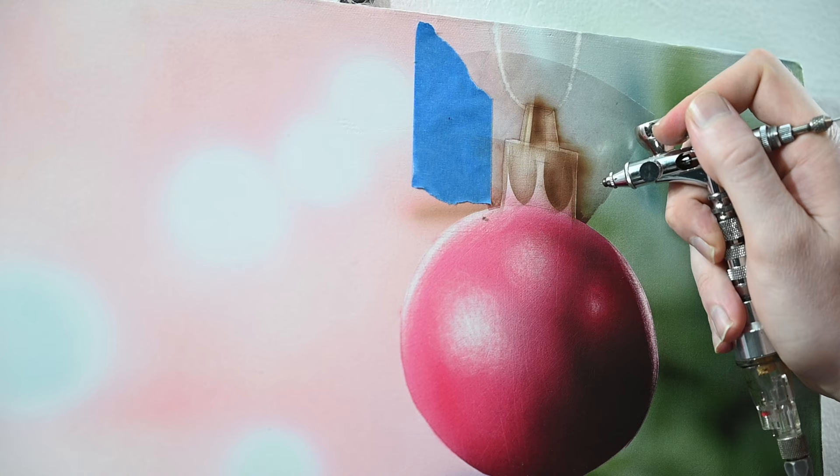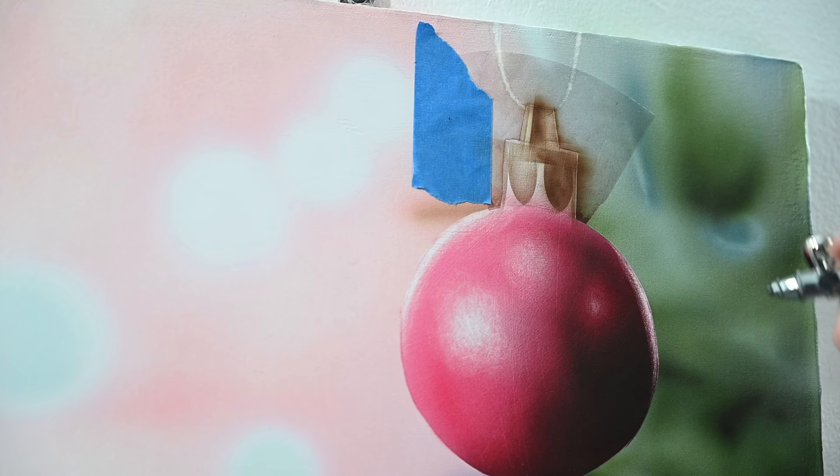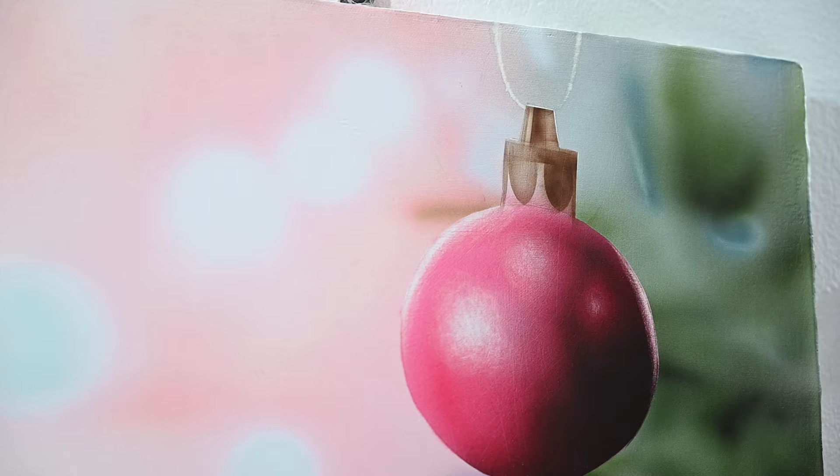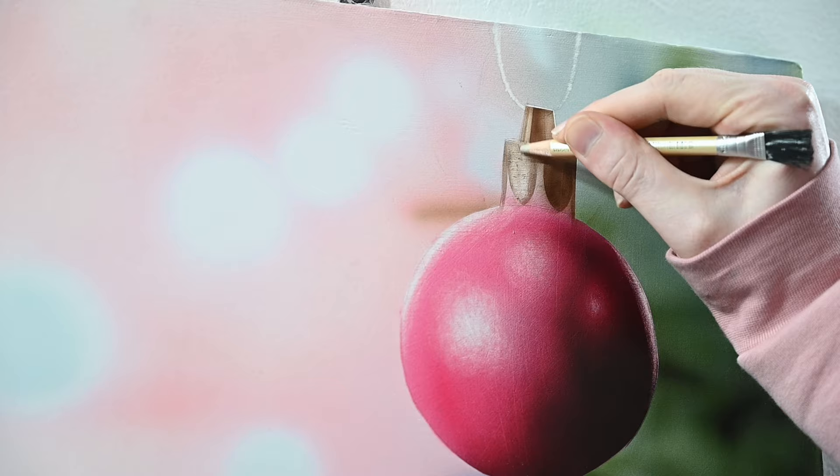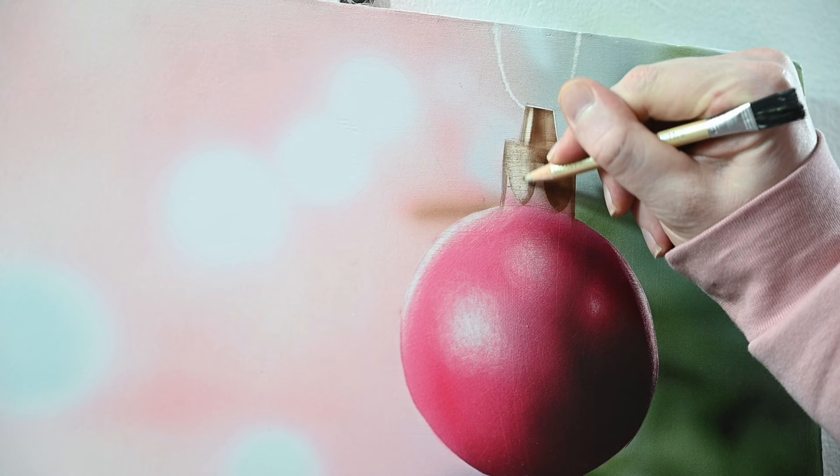At this point, I would say this is basically good enough. So what I want to do is remove that frisket film, then switch over to the eraser and start scratching out some highlights. I'm starting on the left side here, and this area is really bright. So I'm using a lot of pressure on this eraser, just removing as much paint as I can.